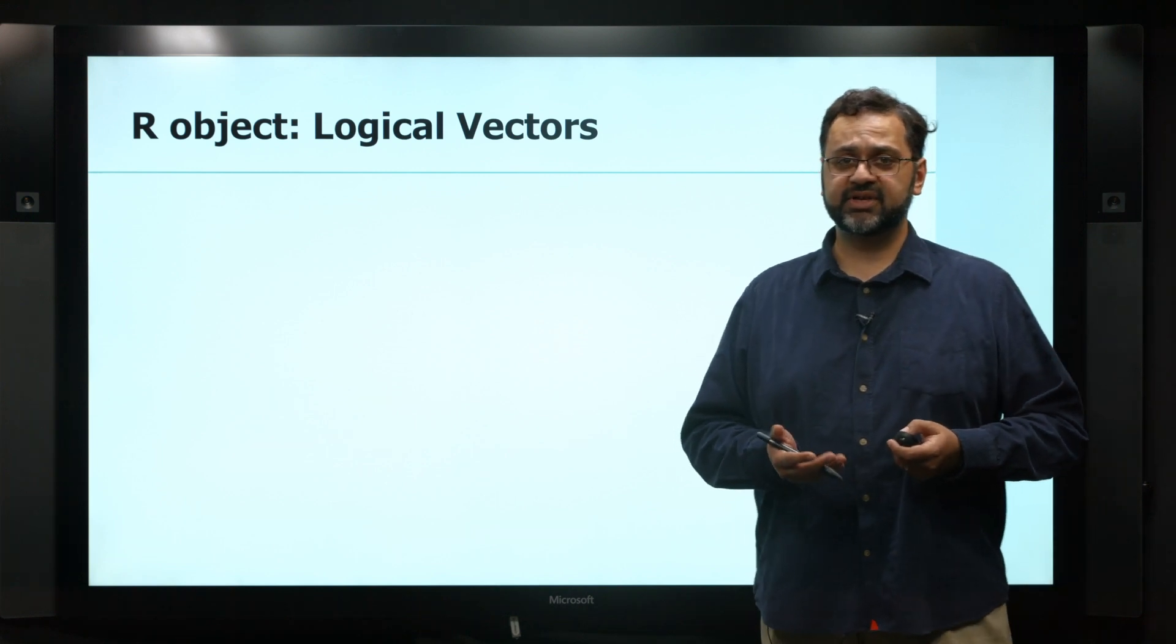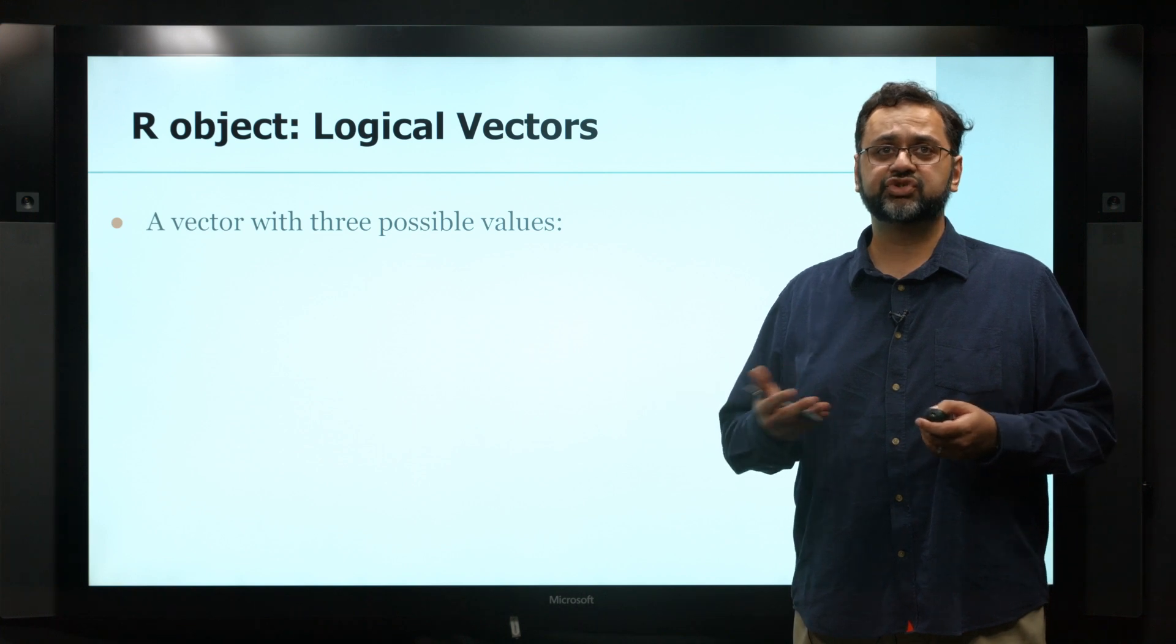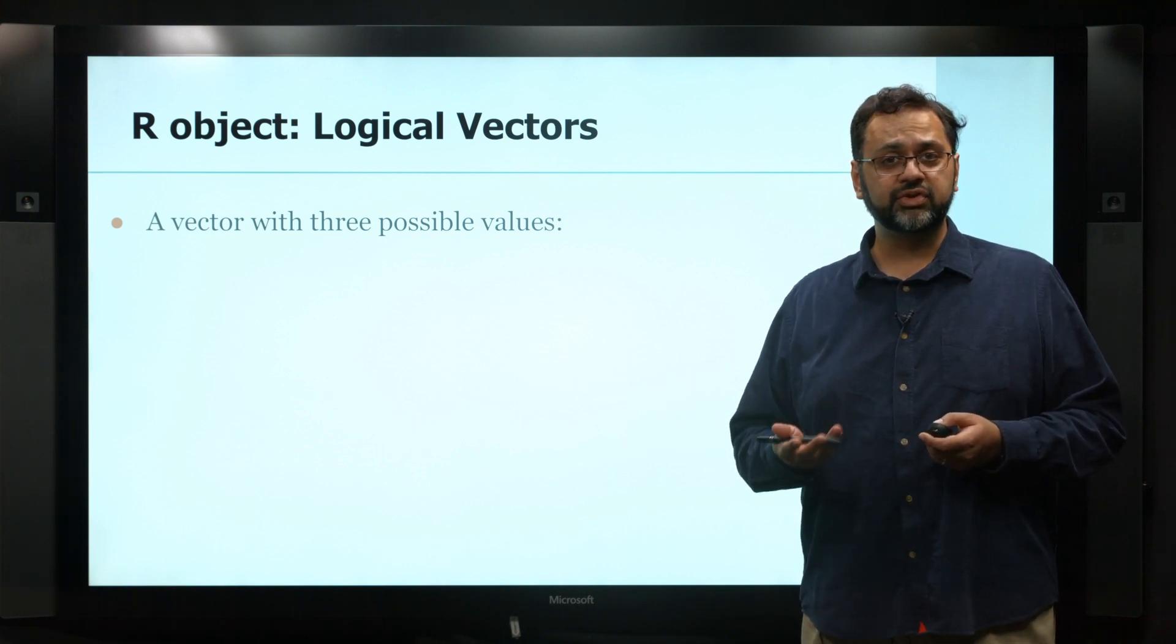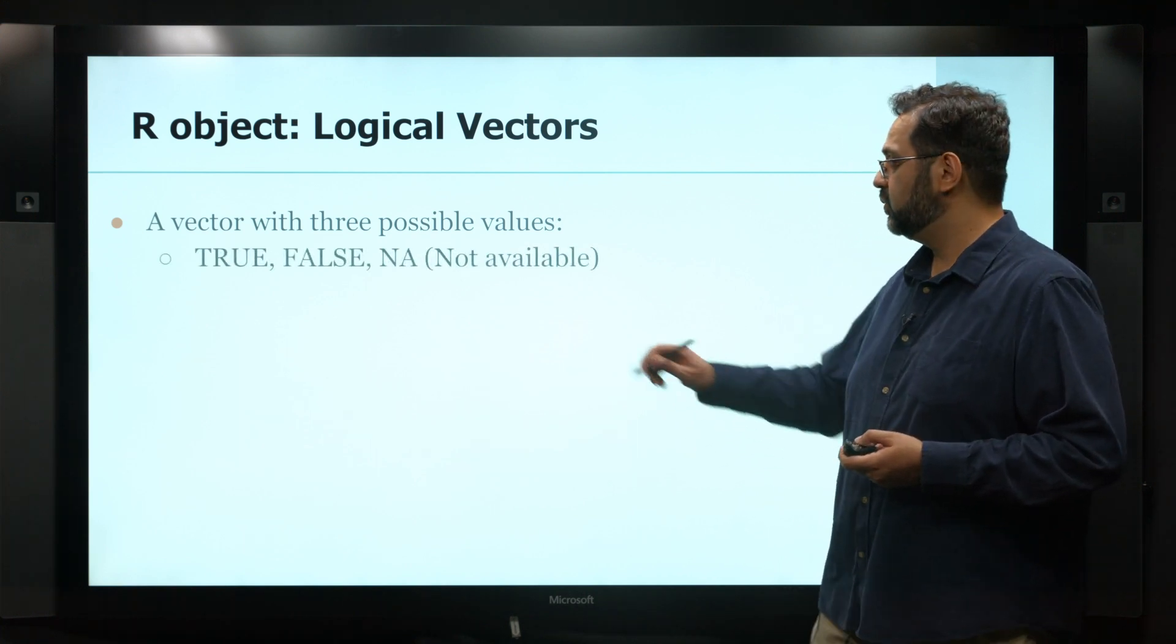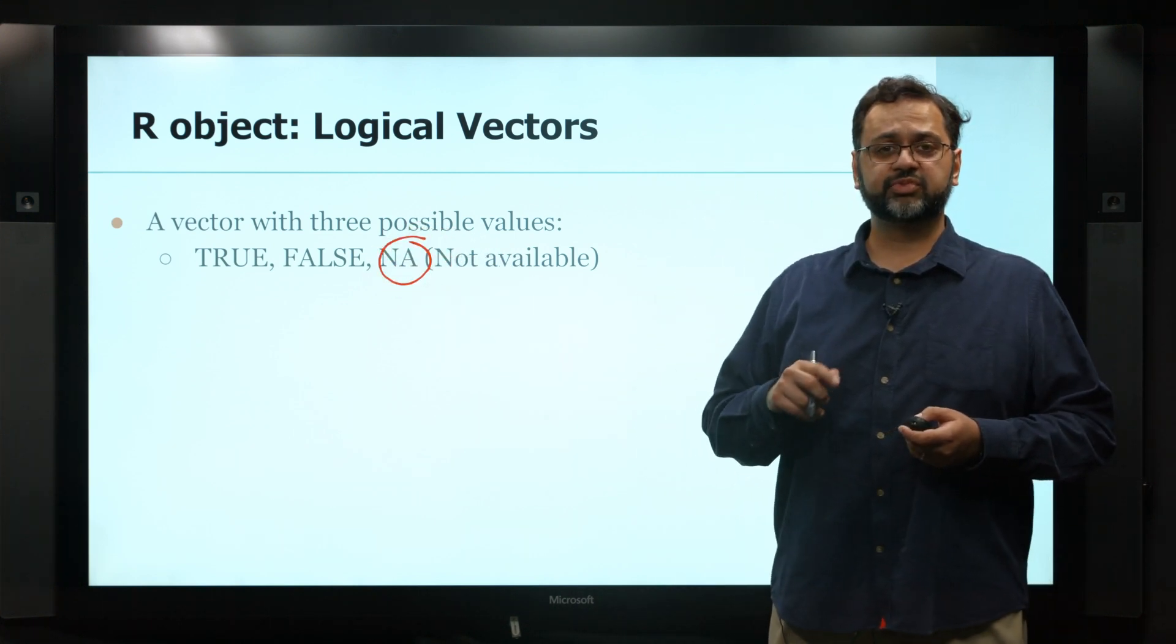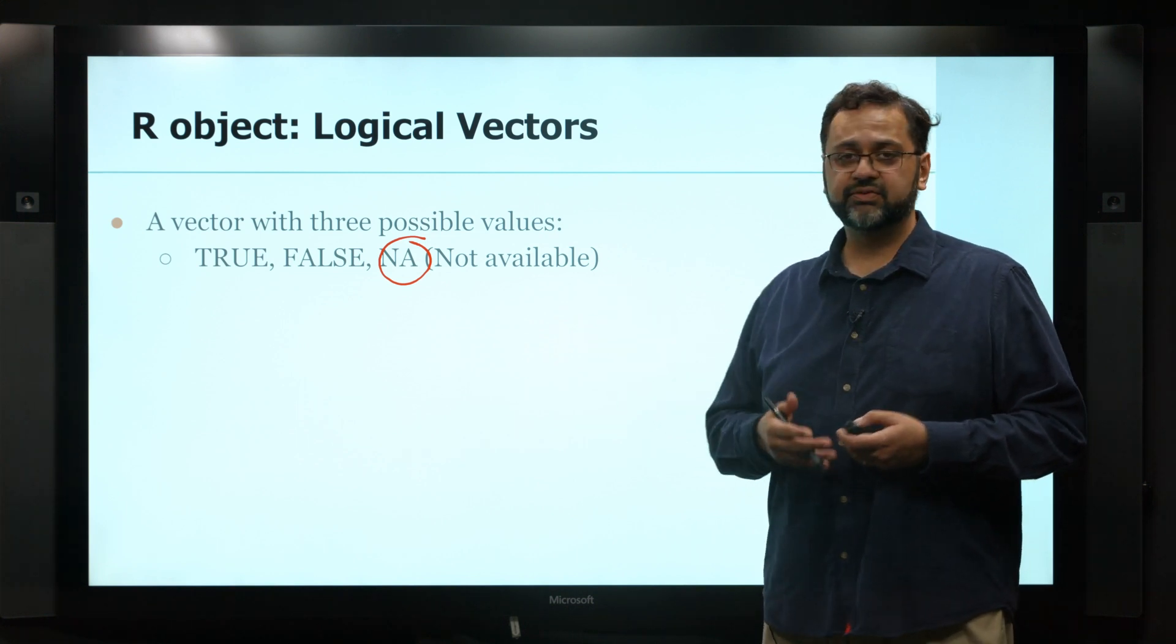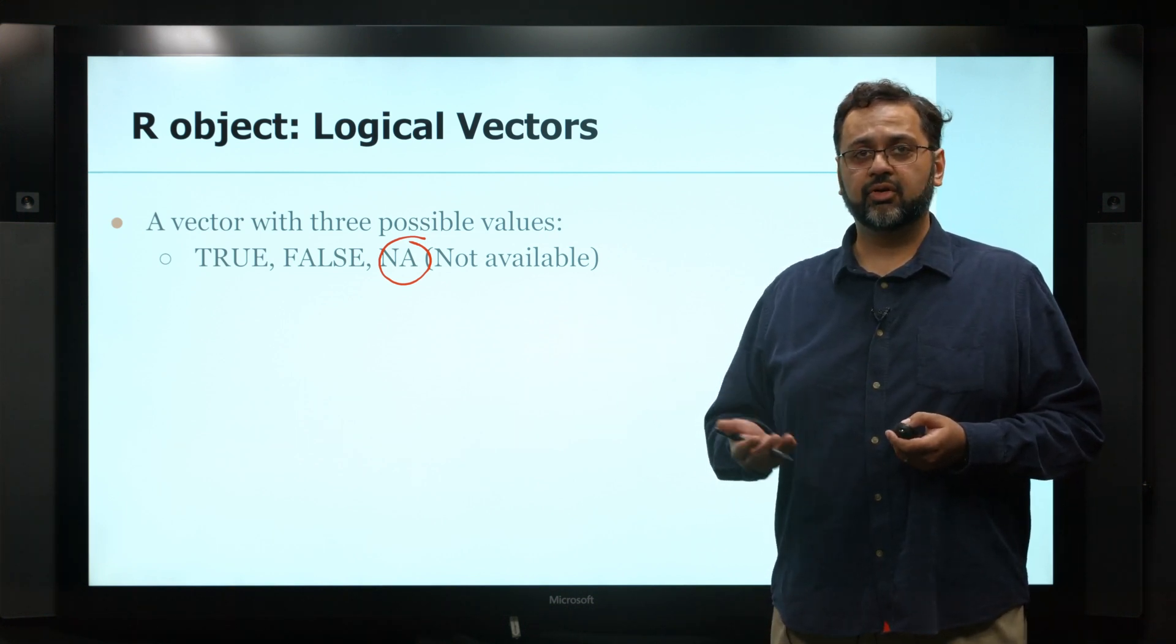Logical vectors are basically what they sound like - a series of values which are just trues and falses. You do have three possible values, the third one being NA. A lot of times, you'll see people just put capital T or capital F. That's fine, but generally I see the full word TRUE, FALSE, or NA.